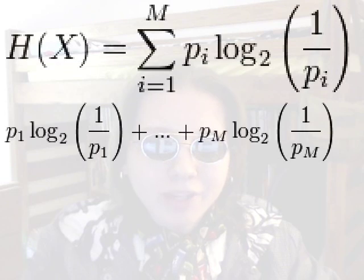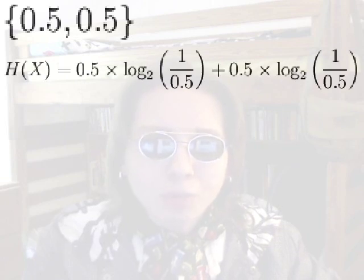For example, if we have a fair coin, its symbols have probabilities of 0.5 and 0.5. So we would calculate H as 0.5 times log base 2 of 1 over 0.5, plus 0.5 times log base 2 of 1 over 0.5.